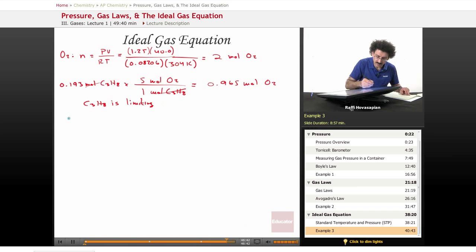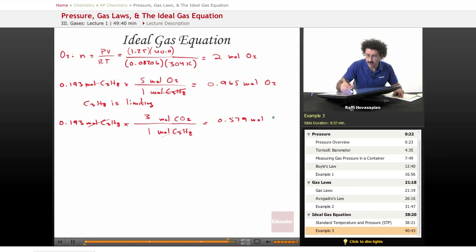Now I do the reaction. 0.193 moles of C3H8 times the mole ratio of that and CO2, which is what I'm looking for, is 3 to 1. That's just straight out of the equation. That means I produce 0.579 moles of CO2.